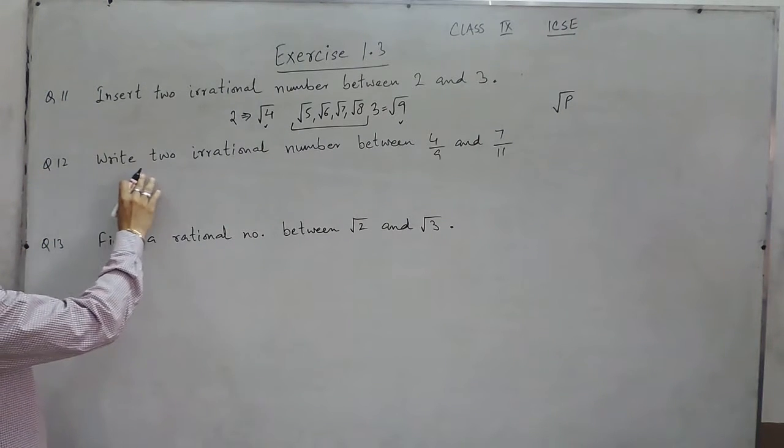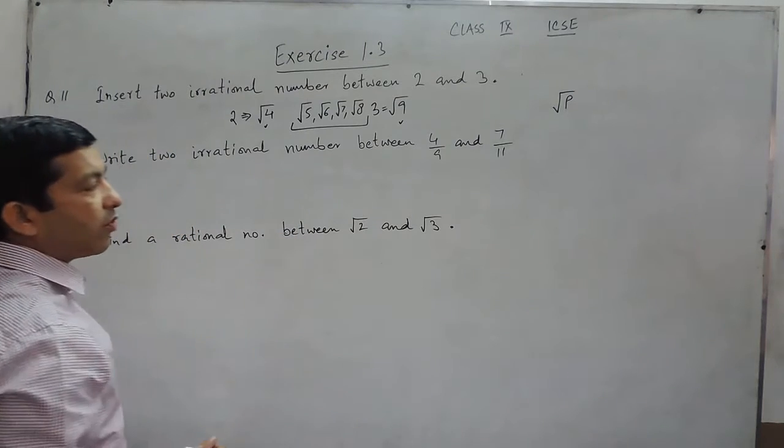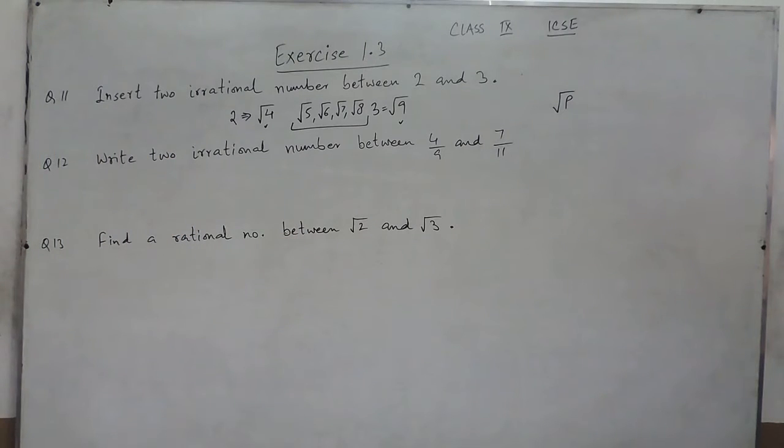Next question number 12 is write 2 irrational numbers between 4 by 9 and 7 by 11.